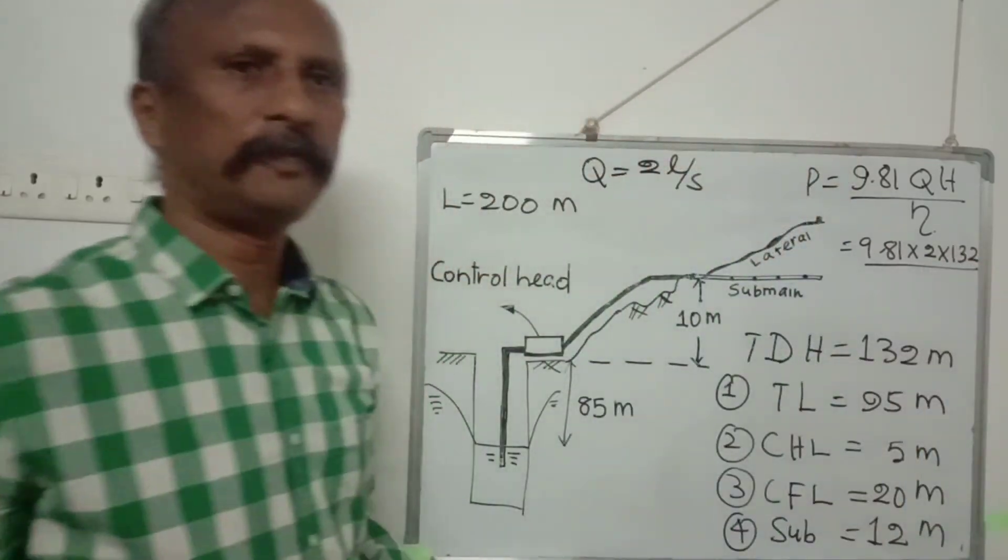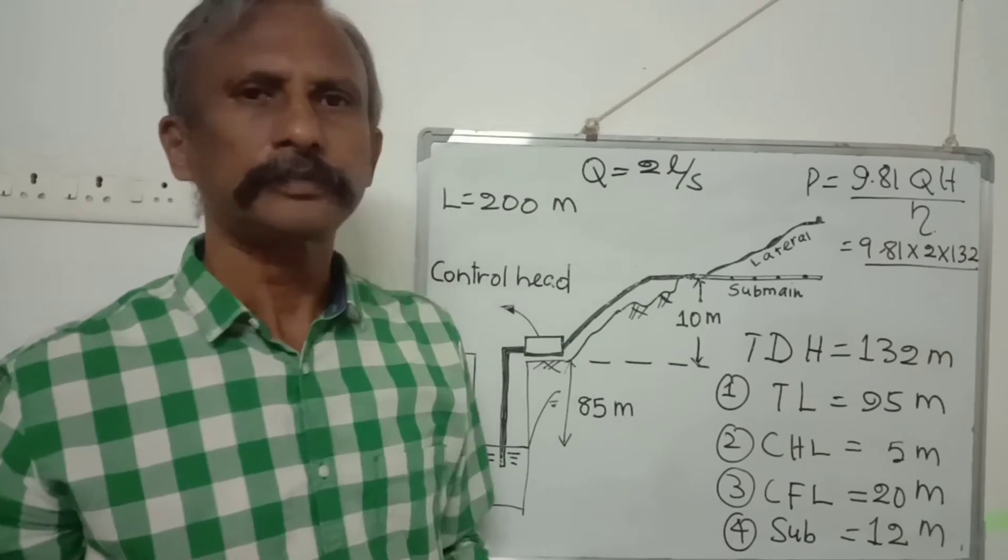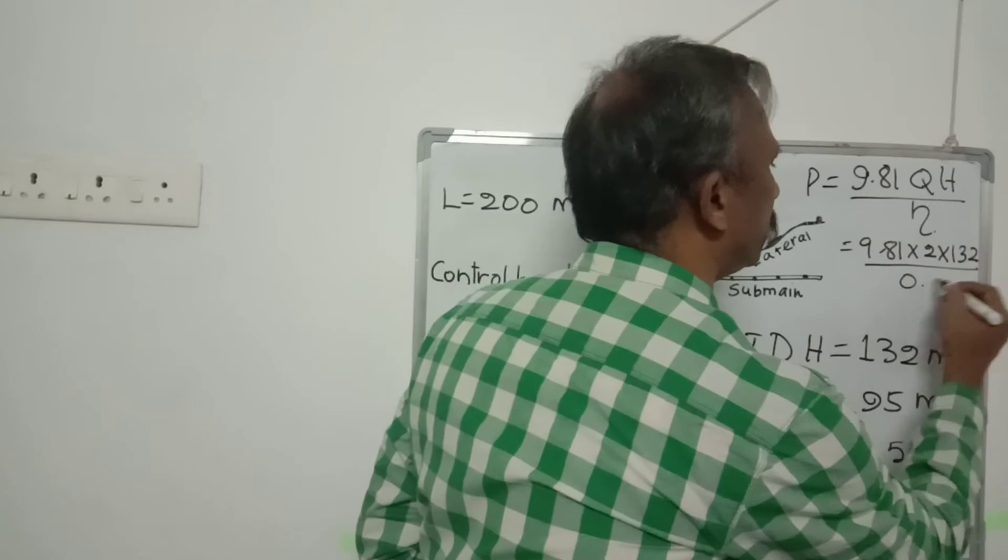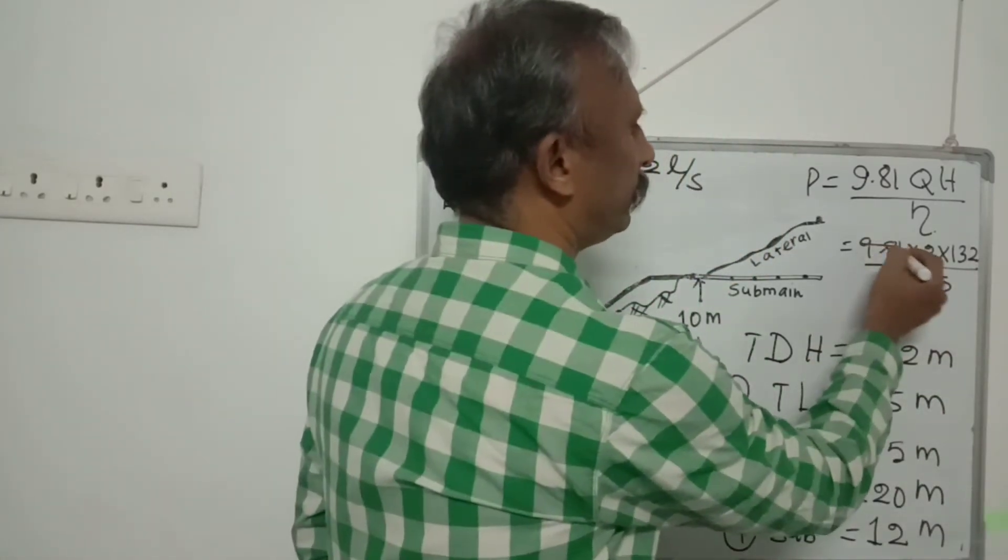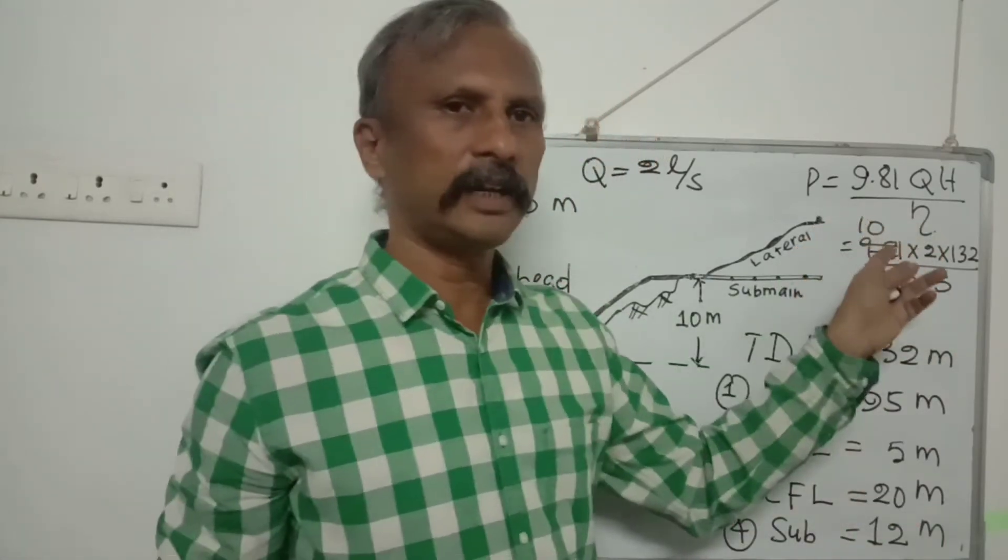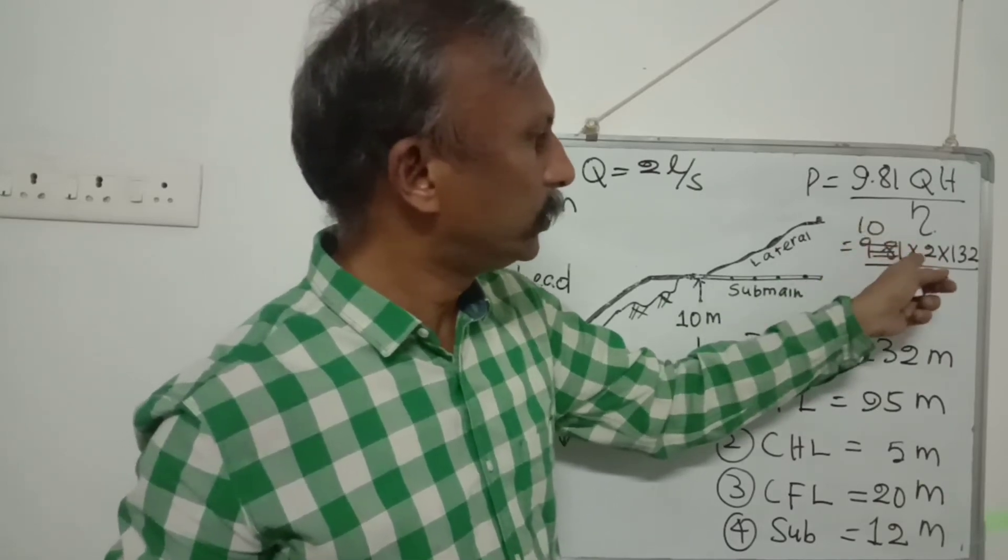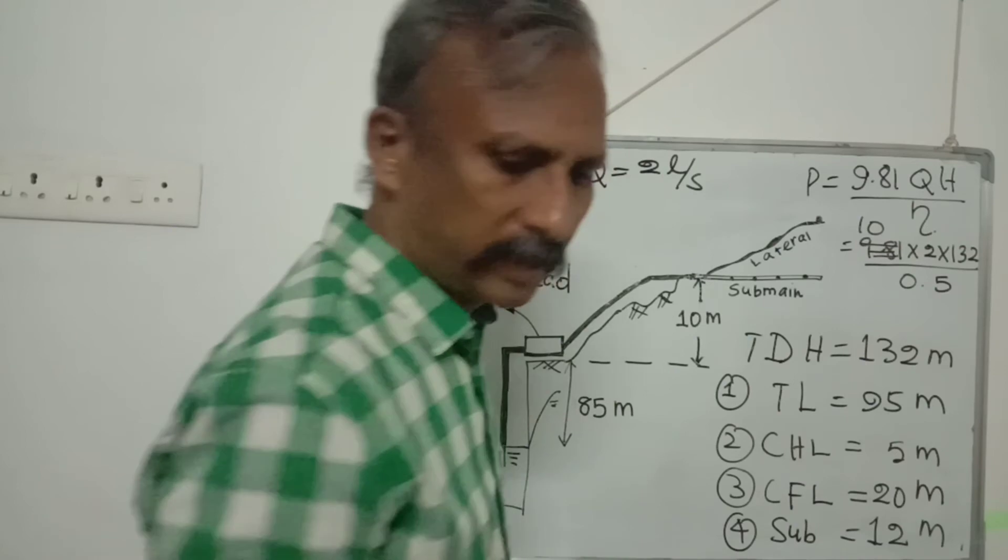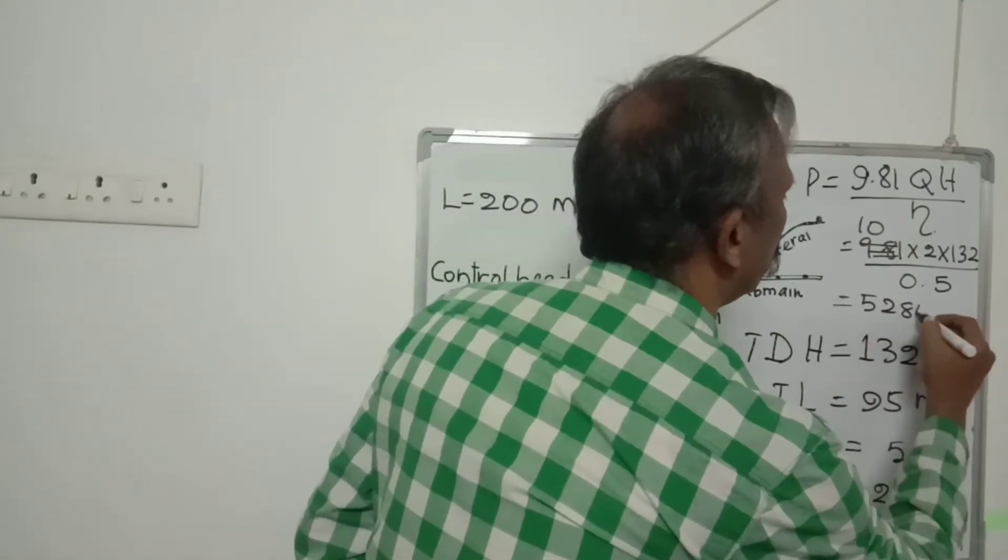The efficiency of the pump varies between 0.5 to 0.7. It is customary to take the lowest efficiency. If you take 0.5, and instead of 9.81 you can assume that to be 10 for simplicity in calculation, 10 × 2 × 132 divided by 0.5, you will get 5,280 watts.